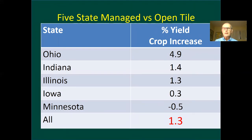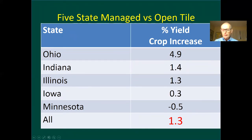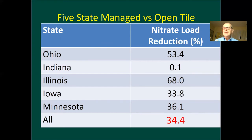Looking at data from various states comparing a completely open tile to one that is managed, there was an overall 0.3% increase, but in Ohio close to a 5% increase, just from managing the water table compared to a completely open tile. The biggest benefit, though, is that when we let less water out of the tile system, we typically find that we also reduce the nitrate going into the stream. With controlled drainage, in this particular observation there was about 34% less nitrate that left the field, which is a significant environmental benefit.